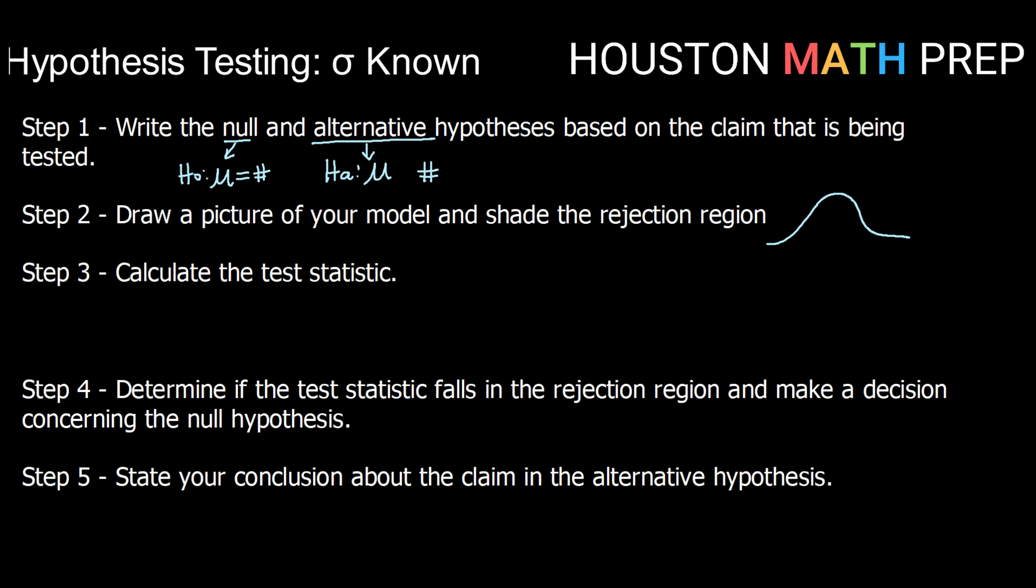After you have found your rejection region and shaded that in, you're going to calculate your test statistic. So in this case, our test statistic is going to be Z star. And that is going to be calculated by taking x̄, or the mean of the sample you're working with, minus μ, so that's the value you have in your null hypothesis, divided by σ over the square root of n.